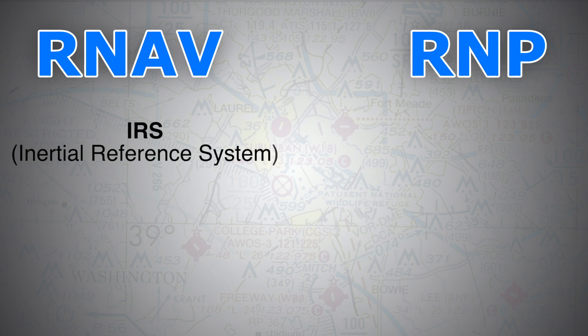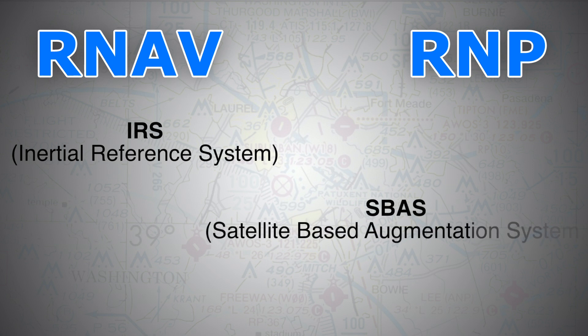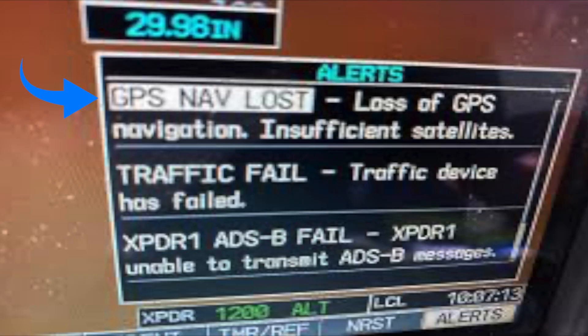For example, the IRS or Inertial Reference System — those ring laser gyros — start from a known position and their accuracy degrades over time without an alert to the pilots; this is an RNAV system. RAIM is best associated with satellite-based augmentation systems such as WAAS (Wide Area Augmentation System) used in the United States or EGNOS used in Europe. When the signal is lost or accuracy deteriorates, it gives you a notification — this is RNP.